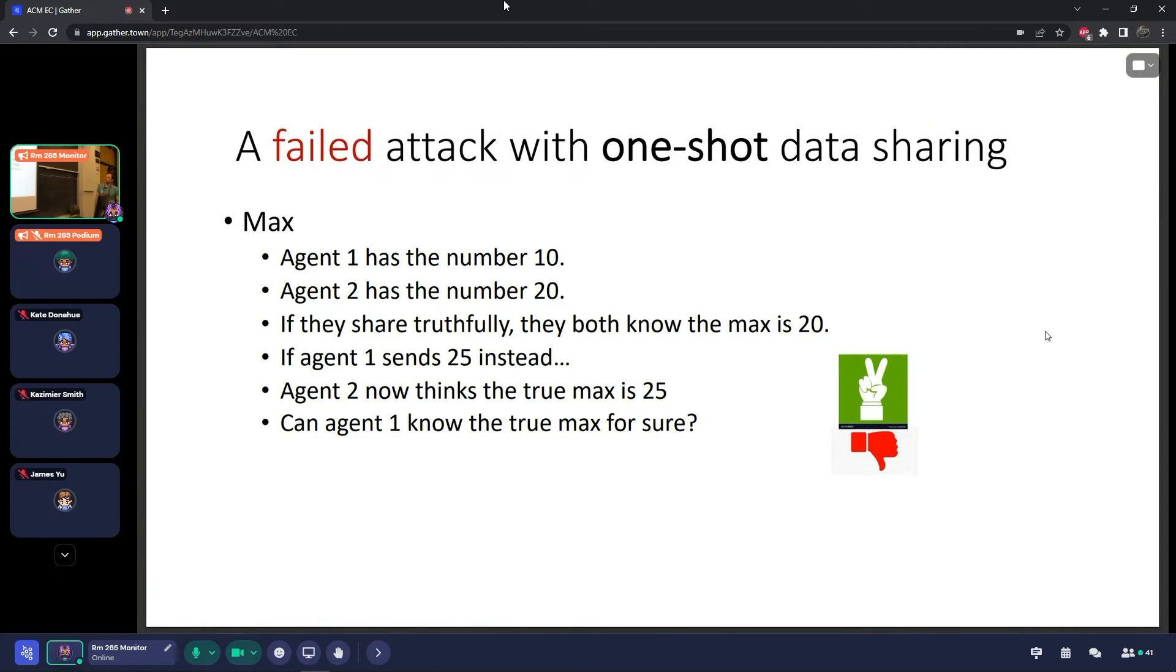But this doesn't always work. It really depends on the algorithm. So let's see where it fails, or at least some attack fails. So in this case, they have the same numbers, but they want to compute the maximum of these numbers. And the maximum is obviously 20. And now let's see some attack by agent one. So agent one sends 25.